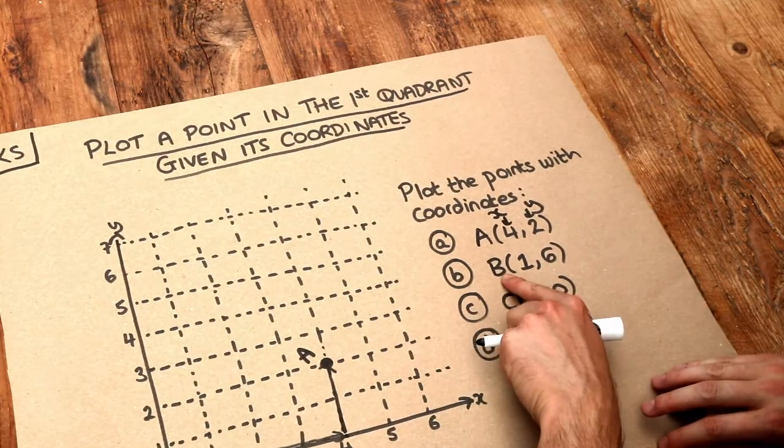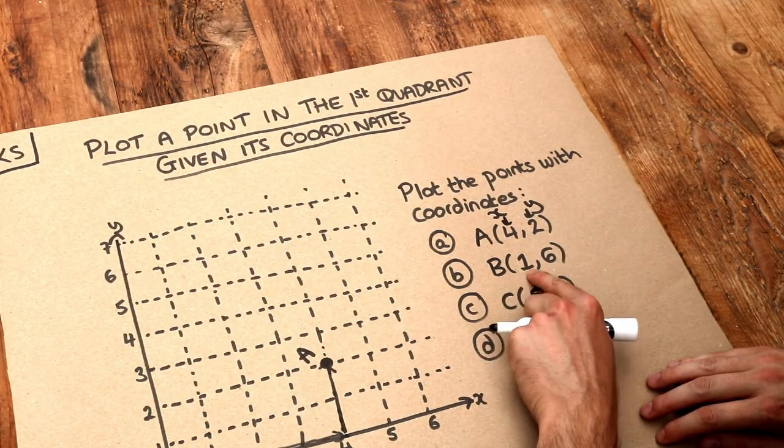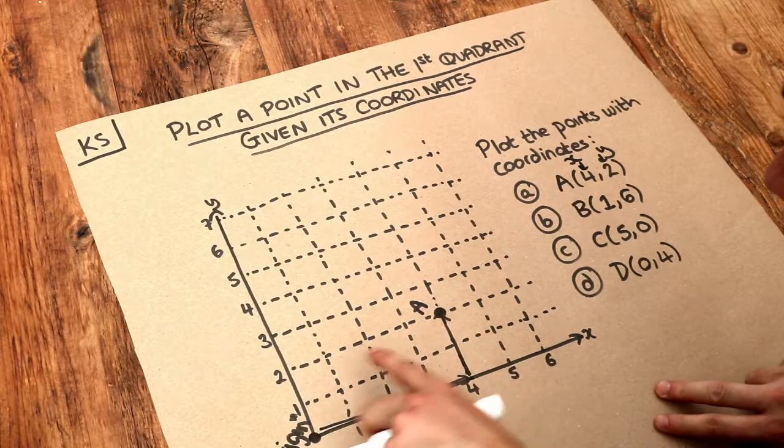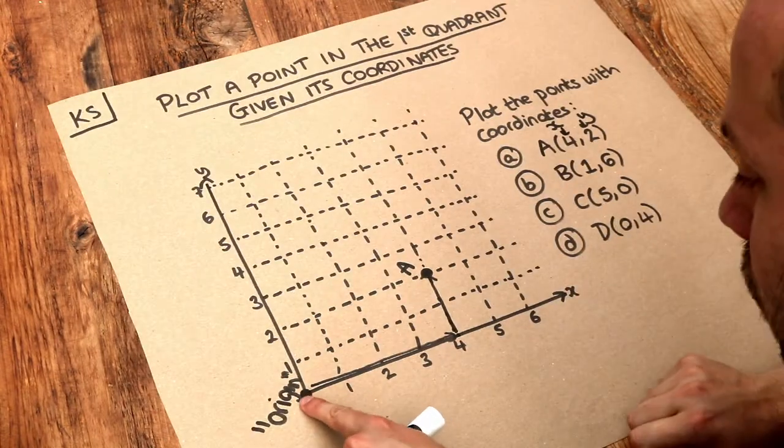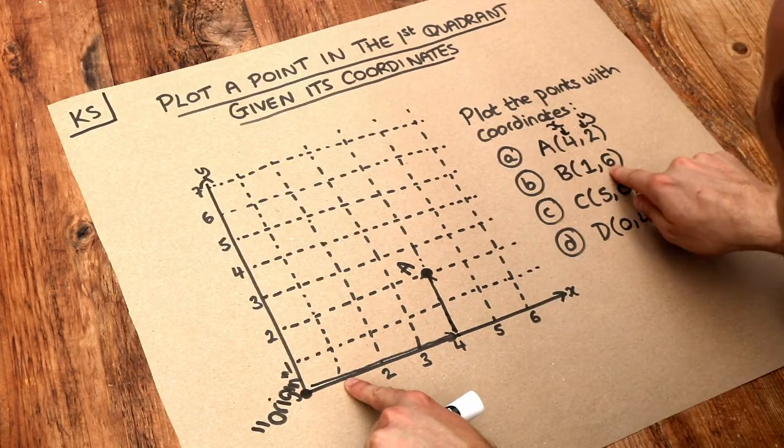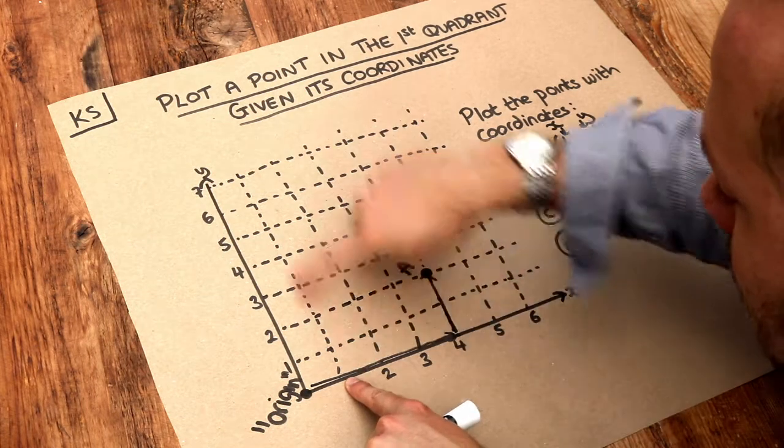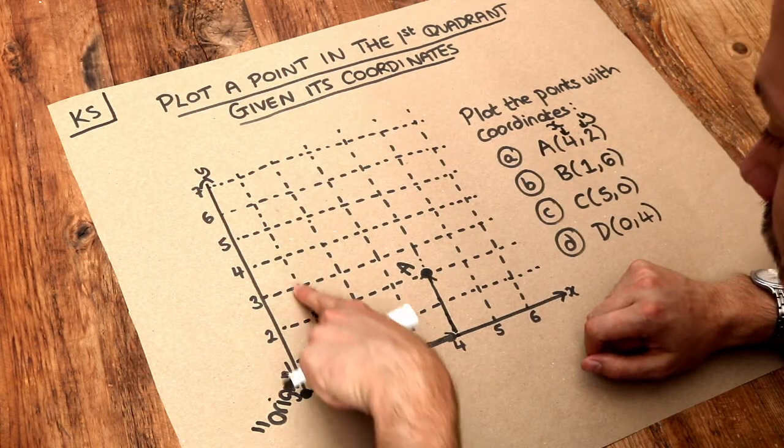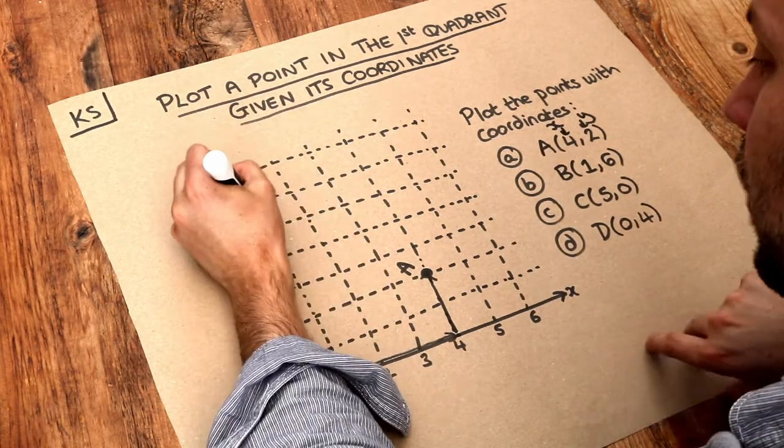What about the second one? The coordinate of B is (1,6). So in the x direction we go along to 1, and then in the y direction, the up-down direction, we go up to 6. So point B will be here.